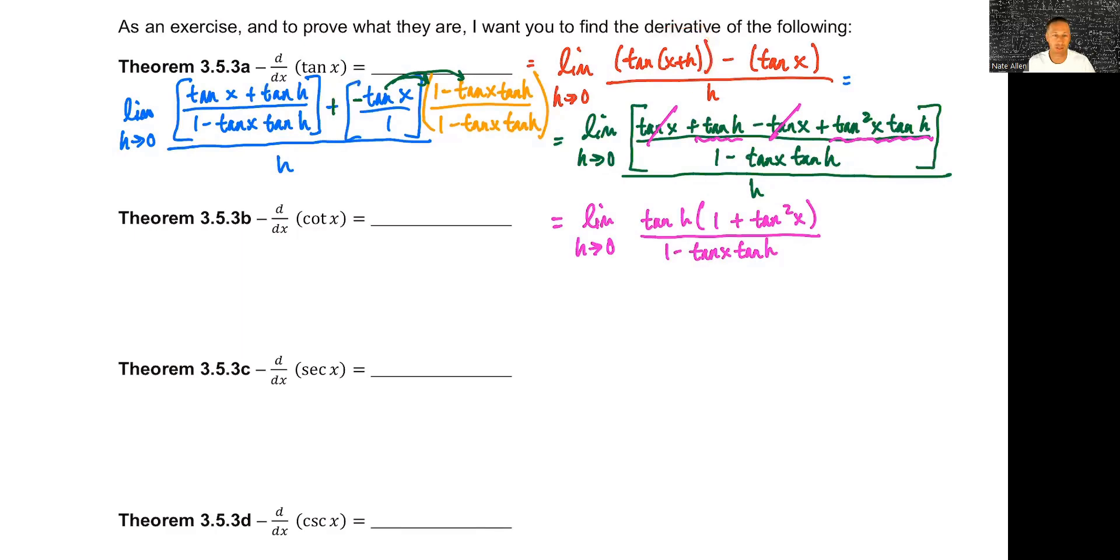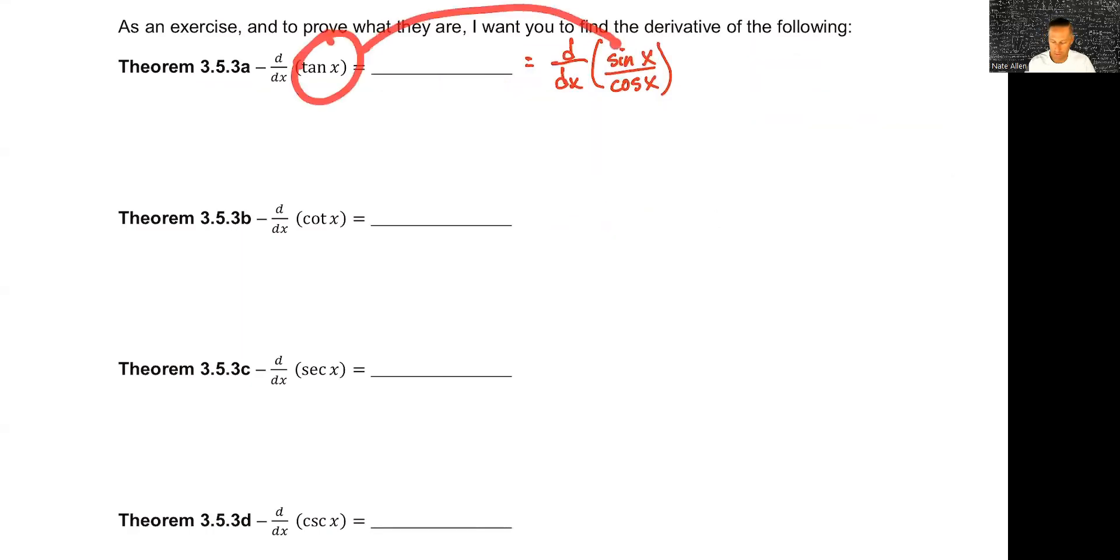Or you could think a little bit more intuitively and say 'I don't want to have to use a sum identity for tangent and then have to multiply and do all this other stuff.' Instead, I'm going to rewrite tangent in terms of sines and cosines and do the quotient rule instead. So there's your hint. Go ahead and give these a try.